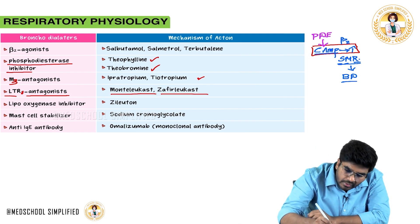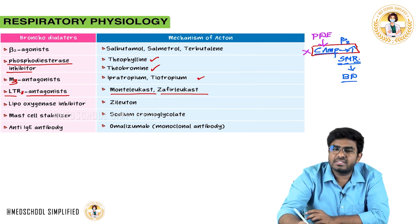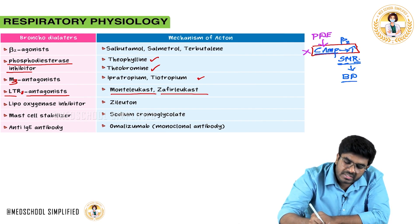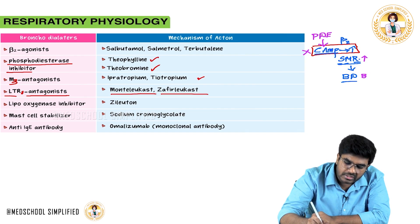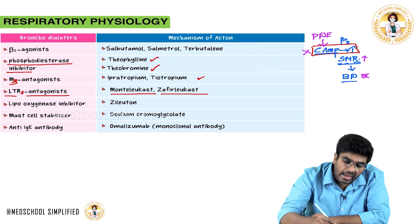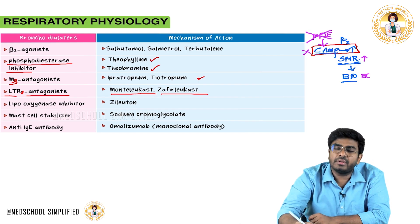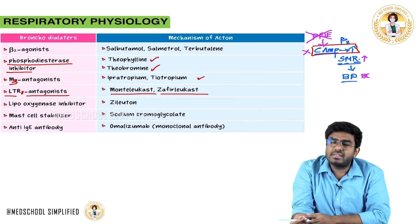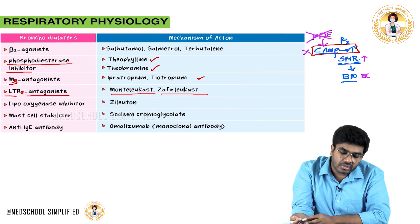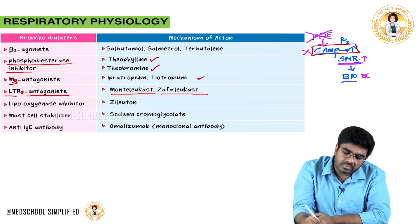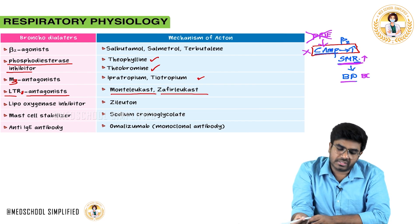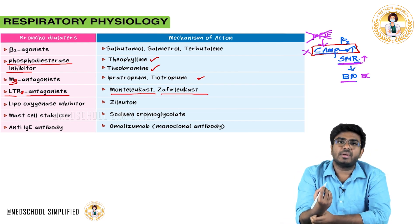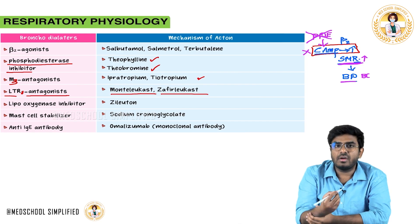By inhibiting phosphodiesterases, cAMP levels remain elevated for longer, ensuring smooth muscle relaxation and bronchodilation. So phosphodiesterase inhibitors like theophylline and theobromine are used in asthma treatment.